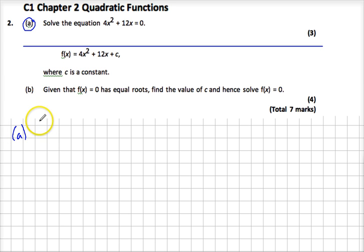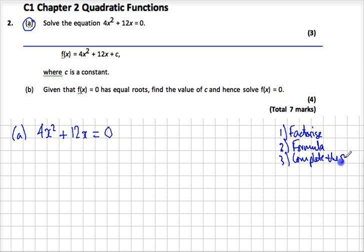So let's get going. It tells us 4x² + 12x = 0. And if you remember from before, solutions to a quadratic can be done in one of three ways: we can factorize it, we can use the formula, or we can complete the square.